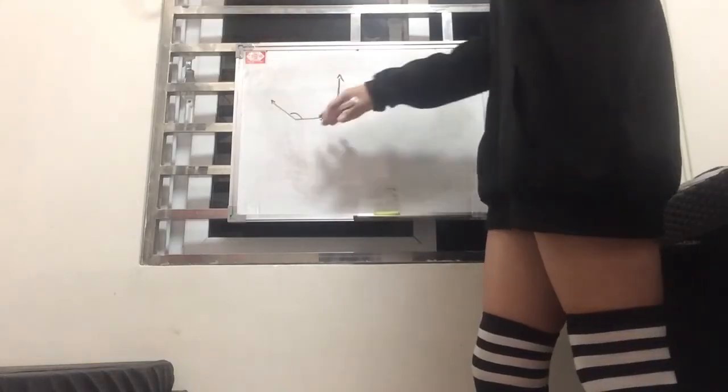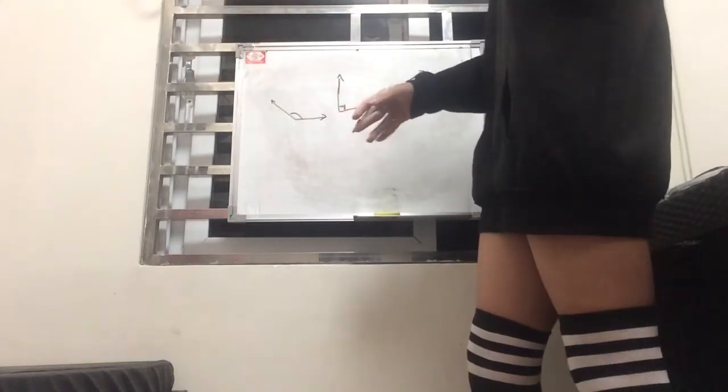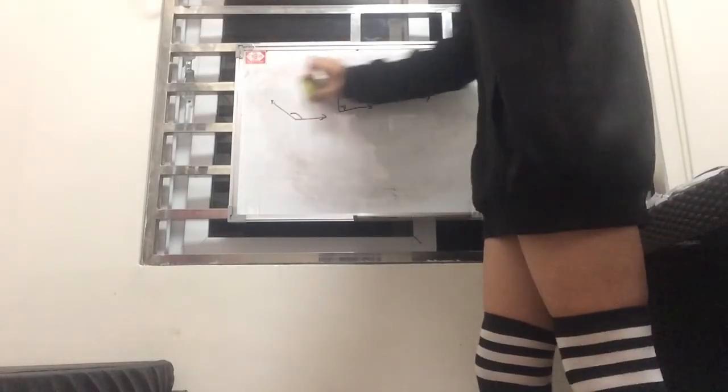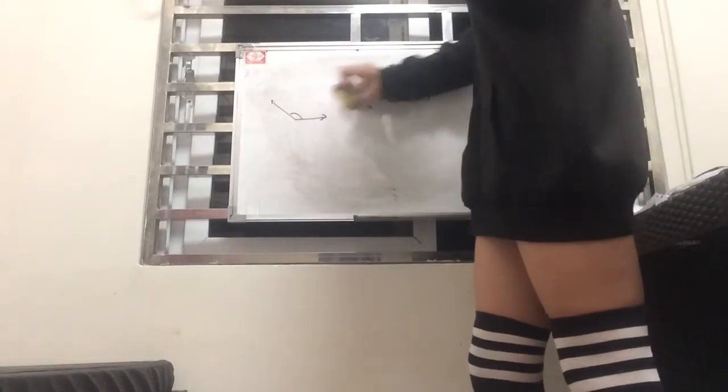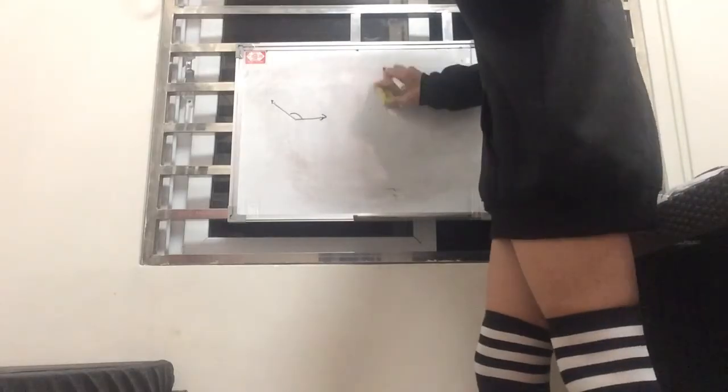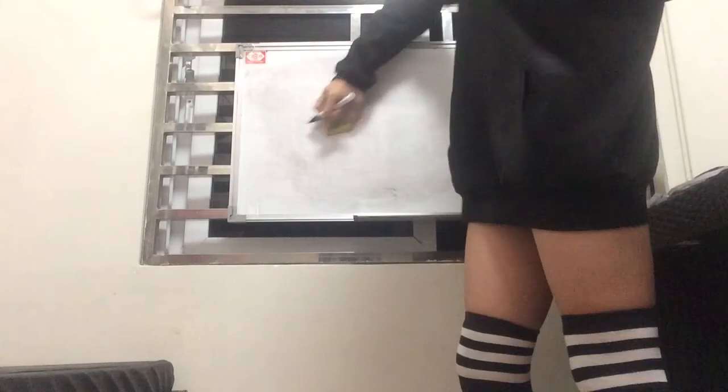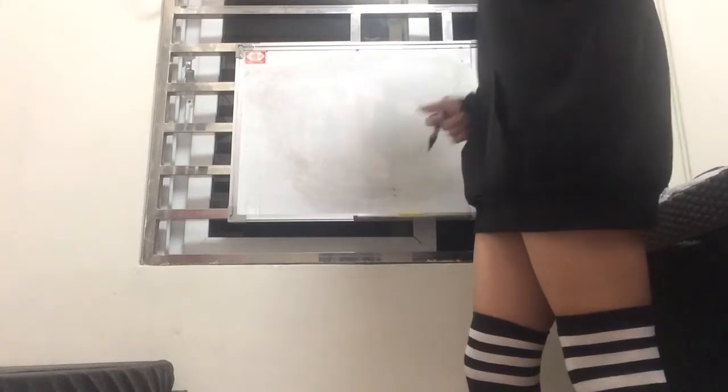And over here on the further part is an obtuse angle. An obtuse angle is basically an angle that's beyond 90 degrees.